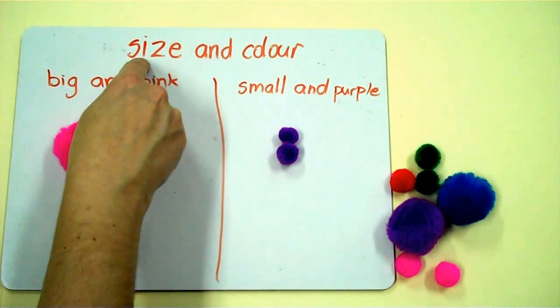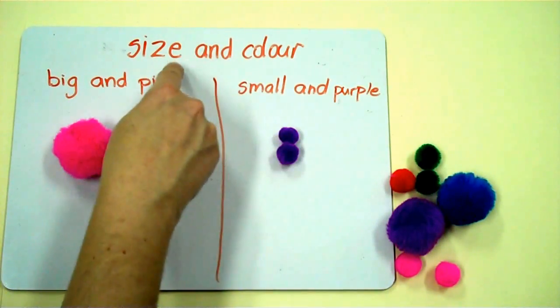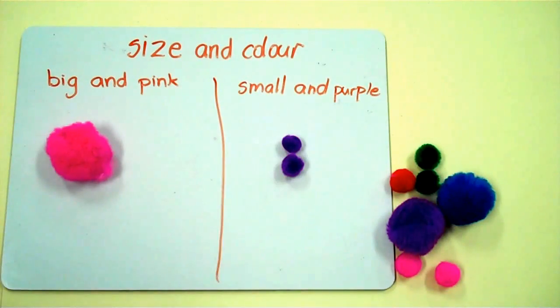Big is a size. Pink is a color. Small is a size. Purple is a color. This is big and pink. These are small and purple. I'm finished.